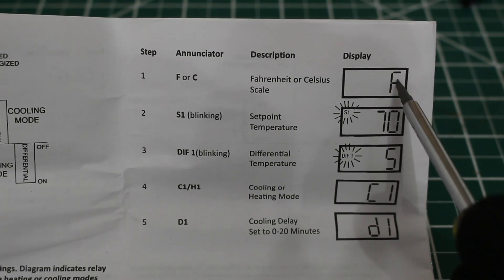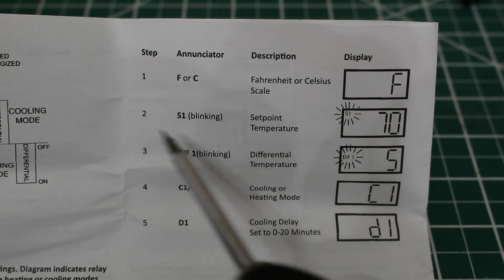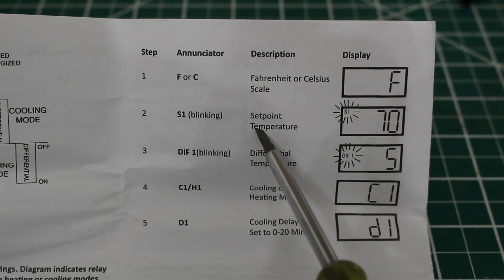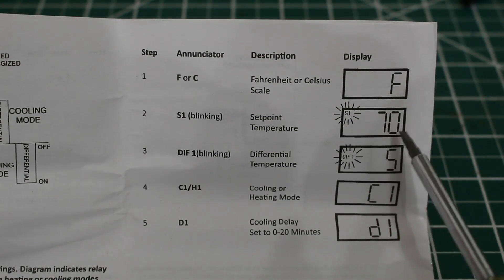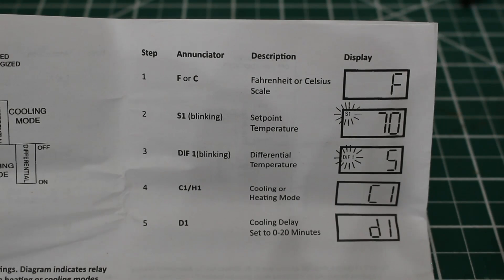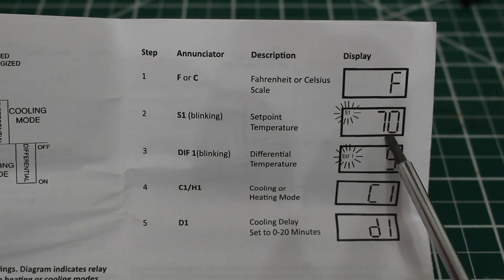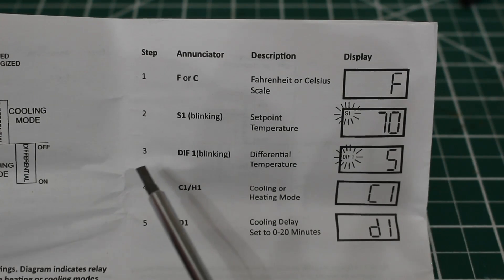Then we're going to click Set once again and move into step two. You're going to see S1 and it's going to be blinking — this is your set point temperature. So let's say this is a refrigerator and you want it at 37 degrees. You're going to set your set point to 37 degrees. This is the temperature you're going to be maintaining. Click Set and you're going to move on to step three.